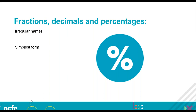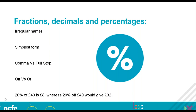Simplest form: learners will need to know that a fraction is not a proper fraction unless it is in its lowest or simplest form. An activity to help could be to have various equivalent fractions on cards to be matched alongside the simplest form — for instance, three sixths equals four eighths, which equals a half. We also have the comma versus full stop issue covered previously. With percentages, there is the 'off' versus 'of' issue: 20% of £40 is £8, whereas 20% off £40 gives £32 — learners may get the wrong answer if they don't realise how many Fs there are.